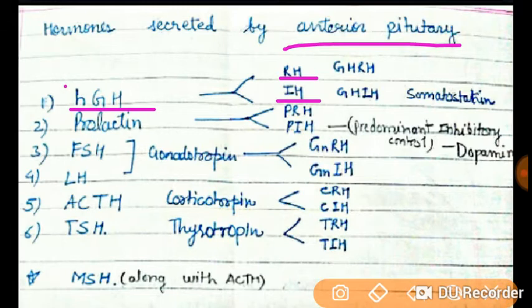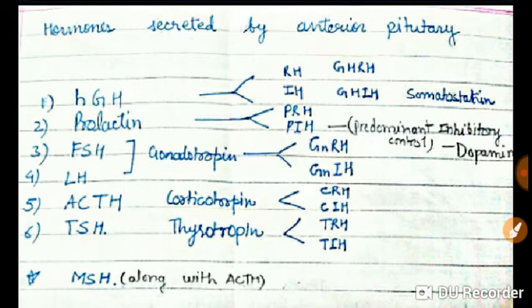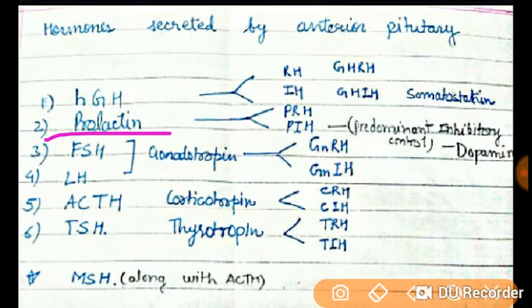The first hormone is Human Growth Hormone (hGH). An important exam question: the other name for the growth hormone inhibitory hormone is somatostatin. When the level of somatostatin goes high, the human growth hormone level automatically reduces, as it is under inhibitory control.